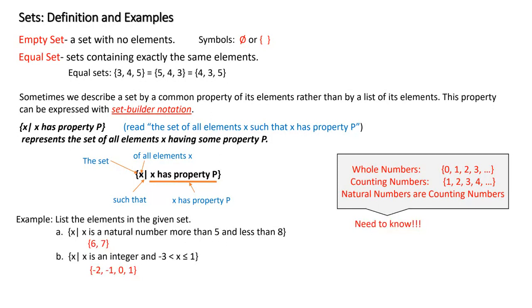The empty set is a set with no elements. The symbol for the empty set can be represented in two ways: a circle with a slash through it, or just the brackets by themselves with nothing inside. Please keep in mind when doing computer homework, do not put brackets on the circle symbol. For two sets to be equal, they have to have the same number of elements and the same elements. The order does not matter inside sets.